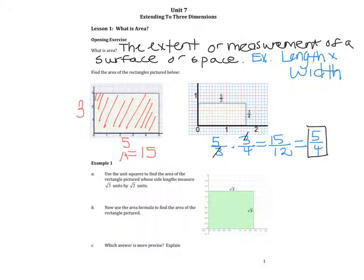For example 1, in the first case scenario, we are asked to use the unit squares to find the area of the rectangle pictured whose side lengths measure radical 3 units by radical 2 units. I'm just going to count up the shaded region, from here to here, it's roughly about a little over 1.7. And I'm going to multiply that to a little over 1.4, so I'm going to use 1.4. So, I get a product equal to 2.38.